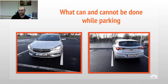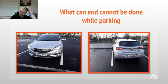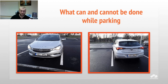Now let's look at what can and cannot be done while parking. In the picture, red means wrong. A car standing on the line is wrong, and a car not within the parking box — for example with the mirror outside the line — is also a mistake. The car must be completely within the box.